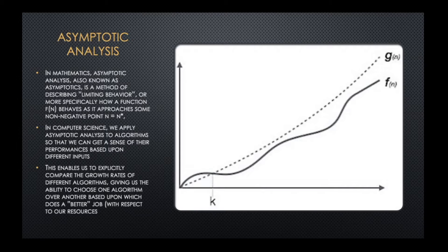For algorithms and computer science, we're going to be talking about non-negative N. Why do we apply asymptotic analysis to algorithms? We apply it to get a sense of their performance based on different inputs. A decent amount of algorithms are dependent upon the size of the input — the larger or more complex the input, the more their resource usage scales with that size.